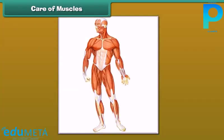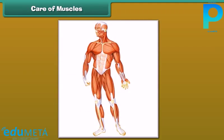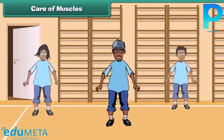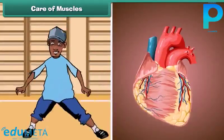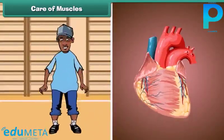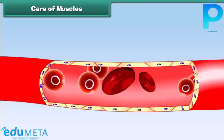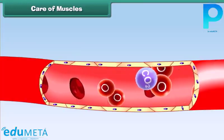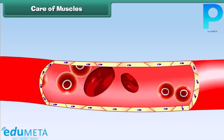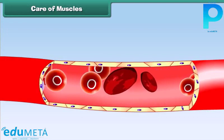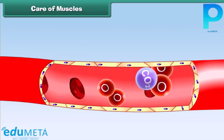For good health, it is important that our muscles are strong and functioning efficiently. Regular exercise makes our muscles strong. The rate of the heart's action increases during exercise and we breathe faster. As a result, plenty of oxygen and nutrients in the blood are supplied to all parts of the body, making us feel refreshed and lively.